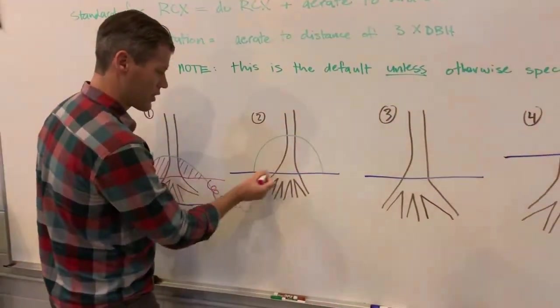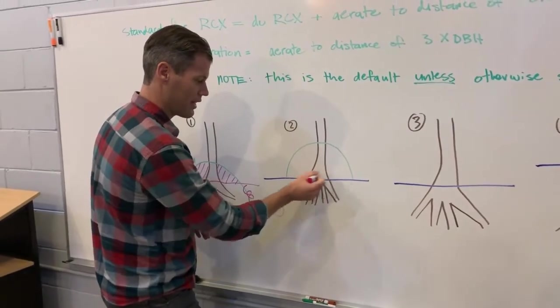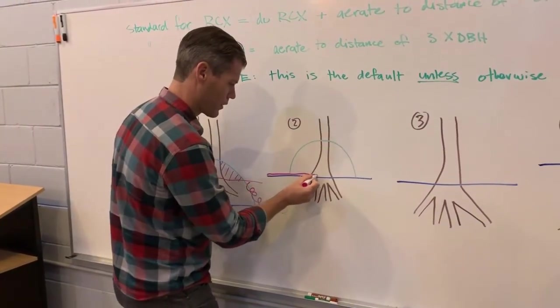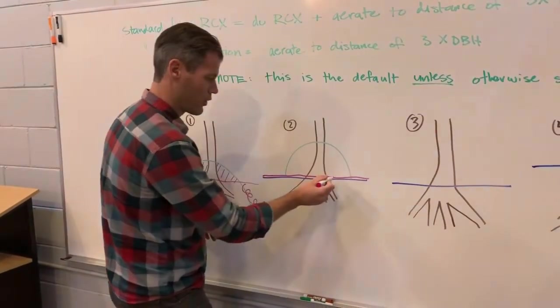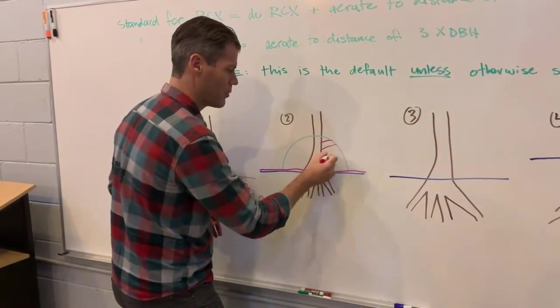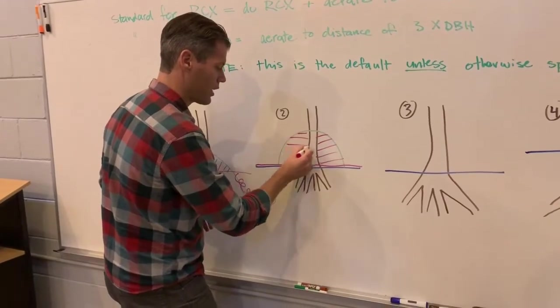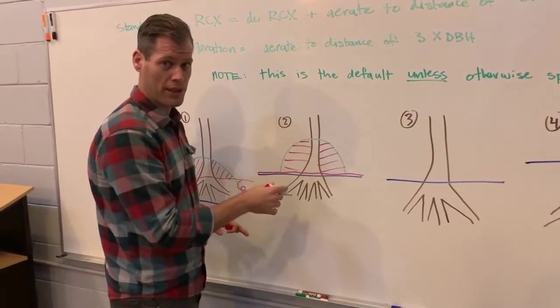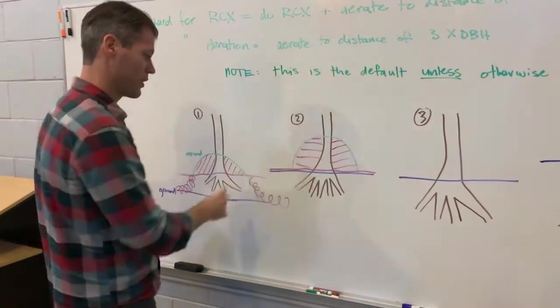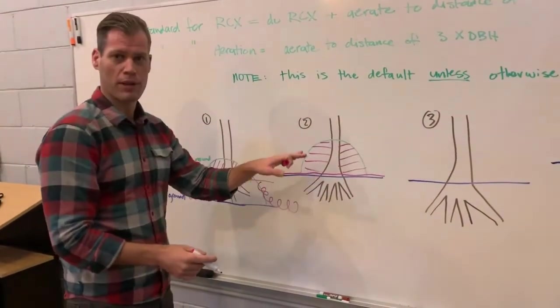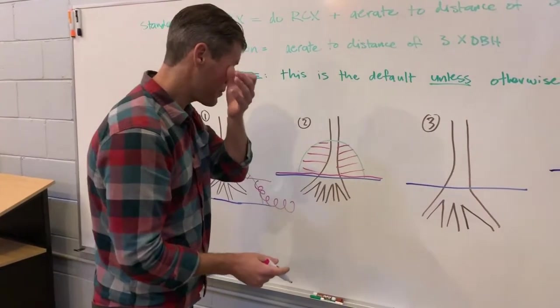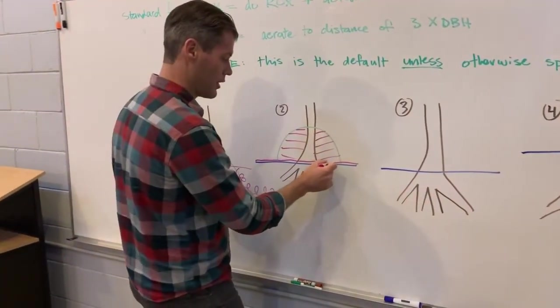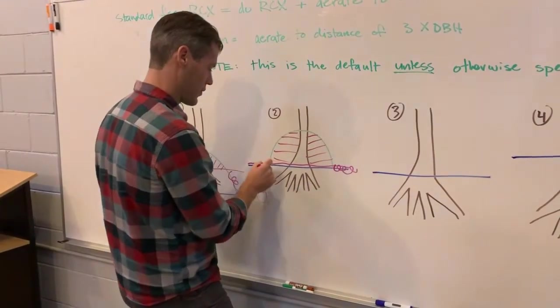Scenario two, since ground level is at the root collar, then these are one and the same. You hit grade. You will have to remove the entire root collar. Now, hopefully, y'all's sales has dug around a little bit and they know what you're up against, because these are very different scenarios. This is probably the most difficult. In this scenario, after this is gone, then you aerate to a distance of three times DBH.